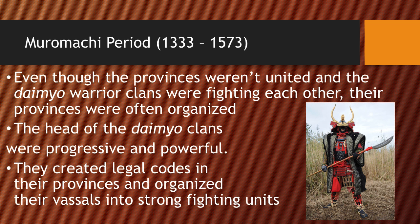Even though Daimyo warrior clans were fighting each other — which was bad for the country's unification — the provinces were actually organized pretty well. The Daimyo clan leaders were very powerful and truly cared about their provinces because their families had grown up there for generations. They created legal codes specific to their province, organized their vassals into strong armies. The Daimyo system was great for individual provinces but bad for the country as a whole, since there was no functioning central government.